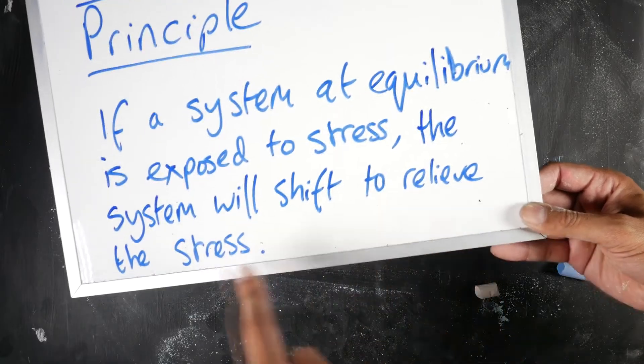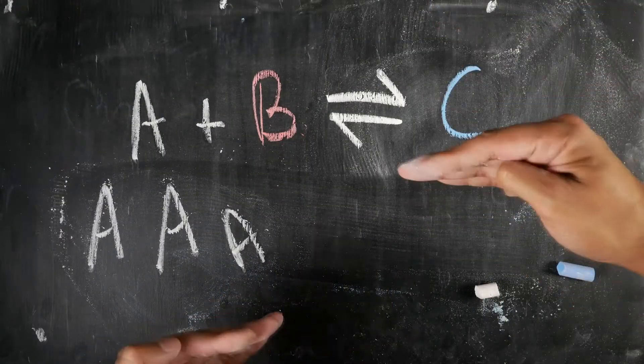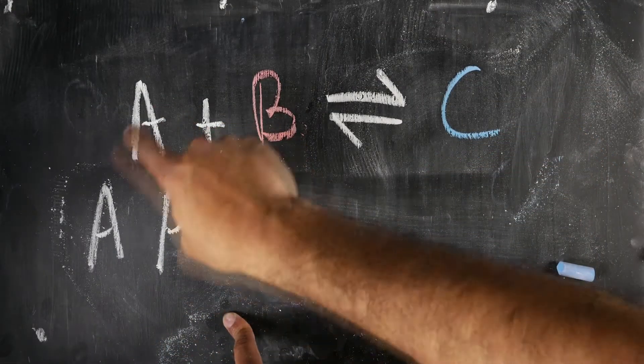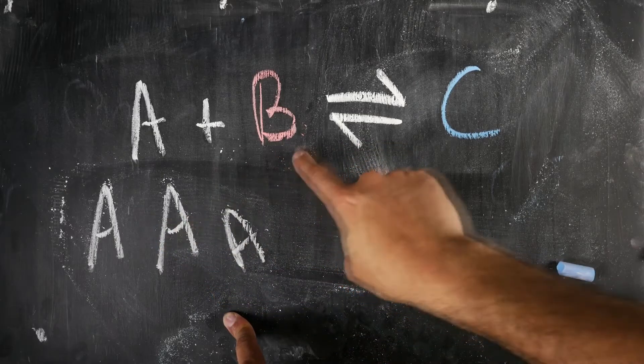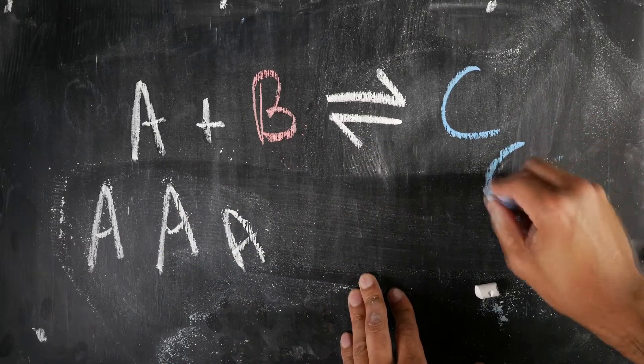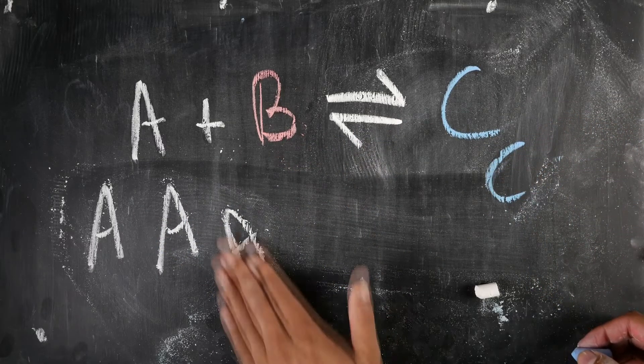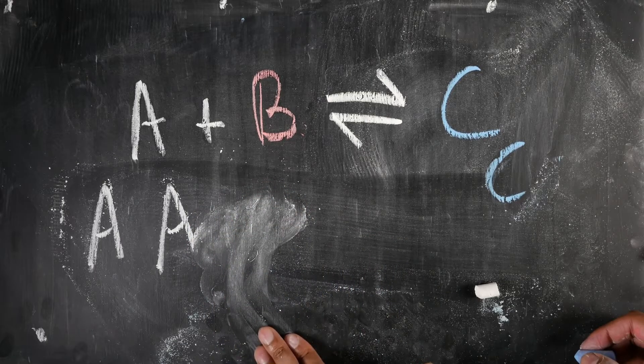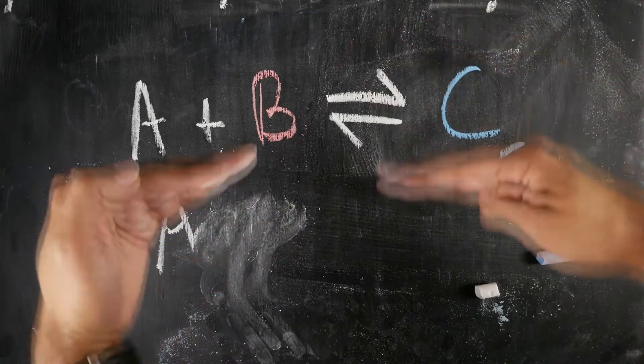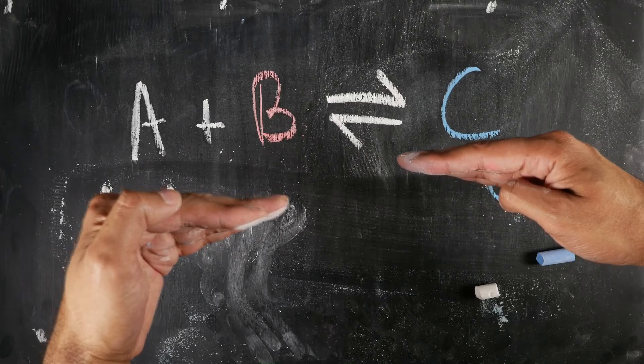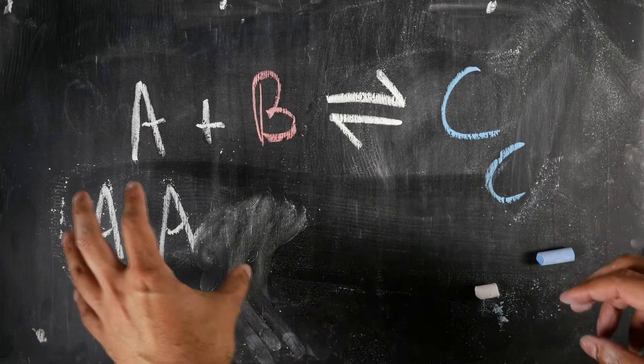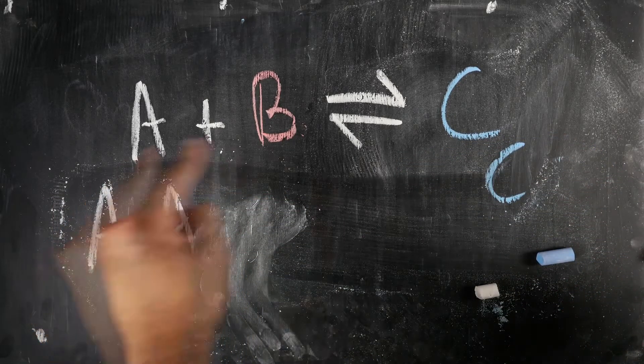it's exposed to stress, the stress being concentration, and the system will shift to relieve the stress. So how will it shift? Well what happens is all of this reacts with the B to produce much more C, and every time it produces C, some of this gets used up. And eventually it's going to balance itself out again.